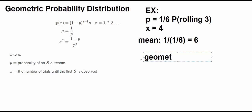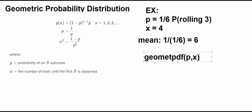So let's highlight that here. That was GeoMetPDF and I typed in p, x. So with your binomial distribution you had to type in n, p, x. Here you just type in p, x. And depending on what calculator you use, the way you enter this in might look slightly different. But here's how it looks here.